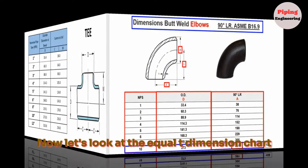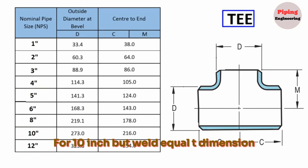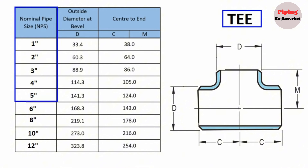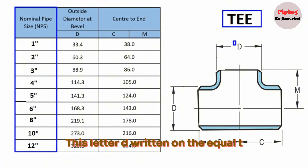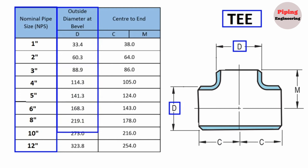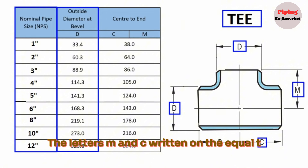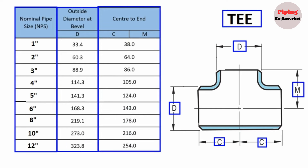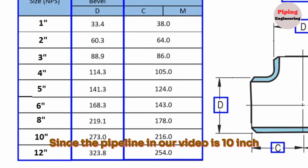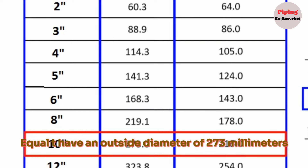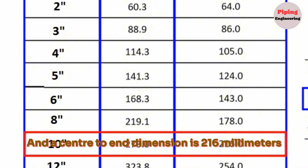Now let's look at the equal T dimension chart for the 10-inch butt weld equal T. The nominal pipe sizes, NPS, of equal T's are shown in the first column of this table. The letter D indicates the outside diameter of the equal T's. The letters M and C indicate the center-to-end dimension of the equal T. Since the pipeline is 10-inch, we look at the 10-inch row. This table shows that a 10-inch butt welded equal T has an outside diameter of 273 mm and a center-to-end dimension of 216 mm.